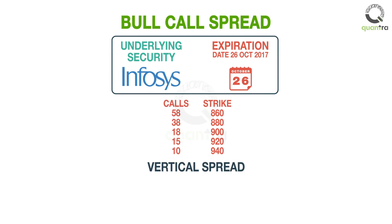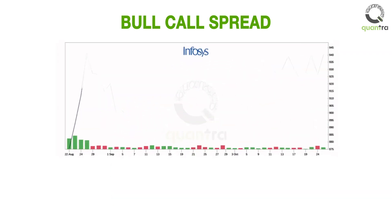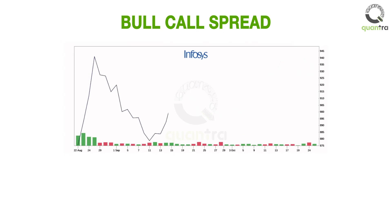Let's learn the strategy through an example. The stock of Infosys is trading at Rs. 900, as on 29 September 2017. A trader expects that Infosys will give marginally good results and the stock will move up to Rs. 940 on the expiration date of 26 October 2017.